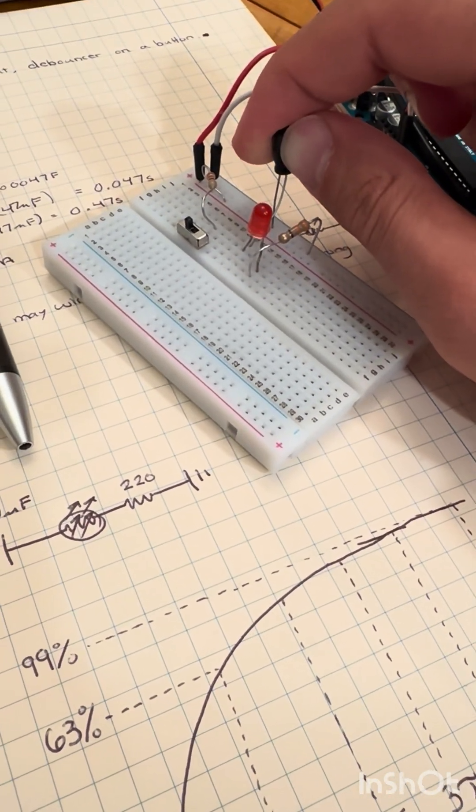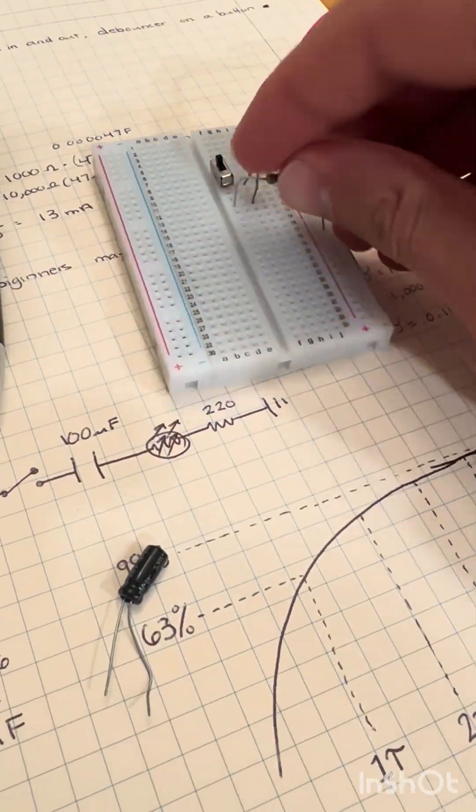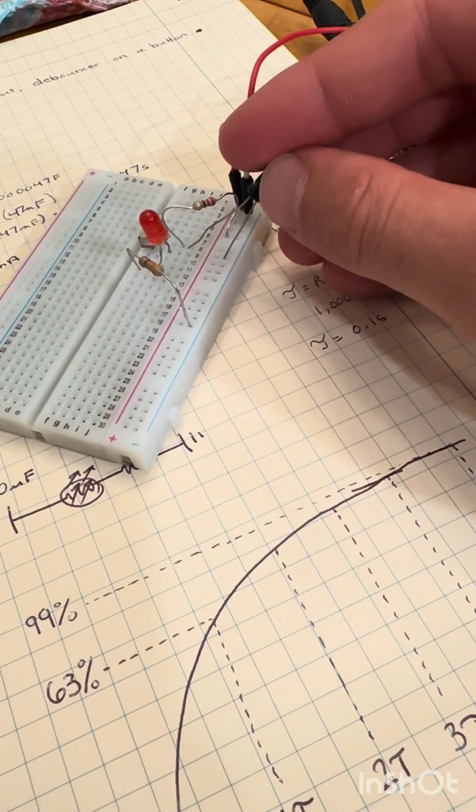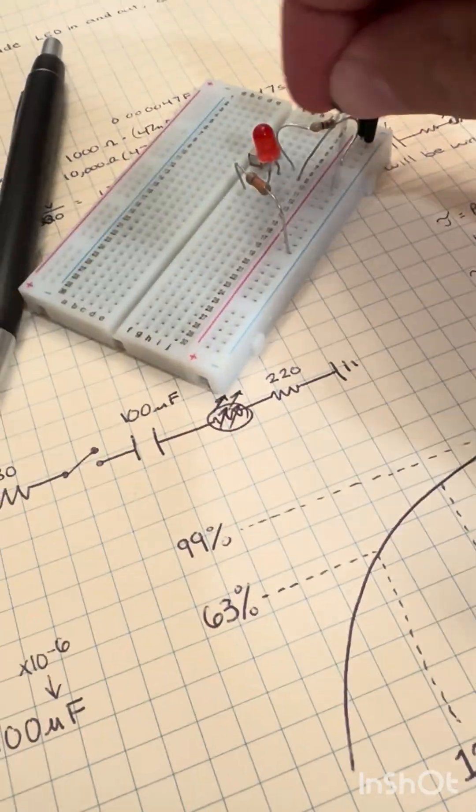This is a common mistake people make when using capacitors in circuits, so let's rebuild the circuit, making sure that when the capacitor is included, it is in a closed loop system.